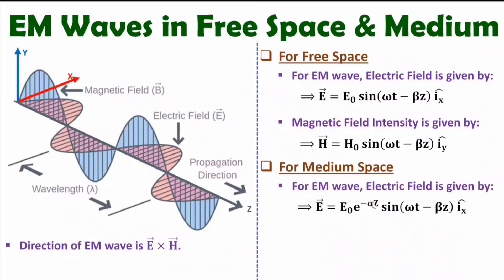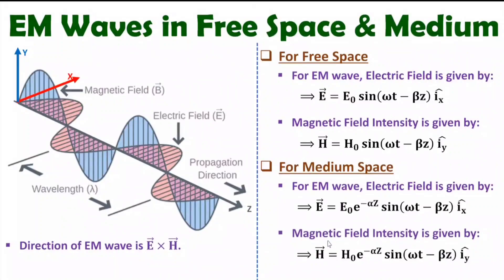For free space, alpha is negligible, so e^(−αz) becomes e⁰ = 1. But for a medium, there is some value of alpha. As you increase the value of Z — since alpha is constant for the medium — as the wave propagates, the total amplitude decreases. So for both electric field and magnetic field in a medium, the signal decreases based on attenuation constant alpha.